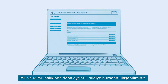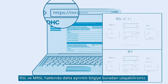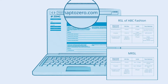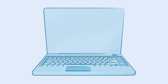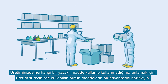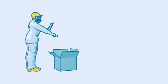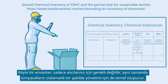You can find more detailed information on RSL and MRSL here. To understand whether you are using any restricted substances in your production, prepare an inventory of all substances in your production process. Such an inventory is not only required by your buyers but also forms the basis for managing chemicals in a systematic way.